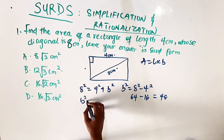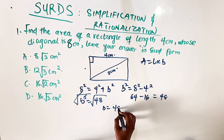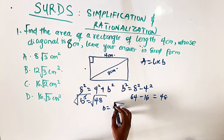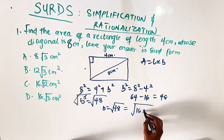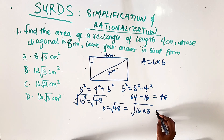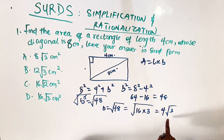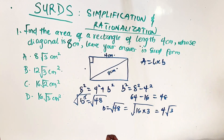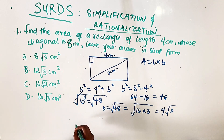Since b squared equals 48, we take the square root of both sides. So b equals the square root of 48, which is the same as the square root of 16 times 3. The square root of 16 is 4, so b equals 4 root 3. We cannot simplify this further so we leave it as the surd 4 root 3.